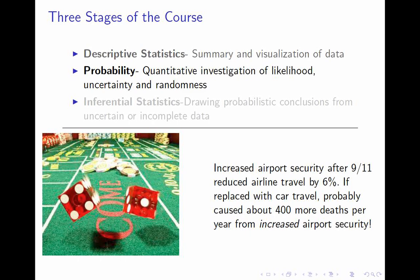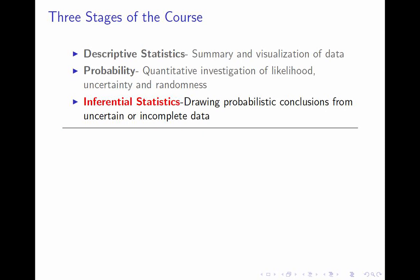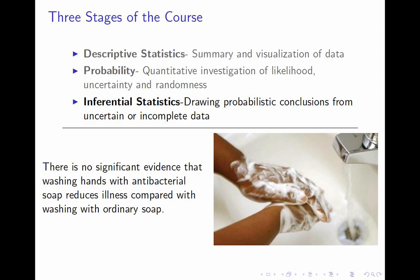The second half of the course will be devoted to the central topic: inferential statistics, which takes descriptive statistics and probability and puts them together. Inferential statistics is drawing probabilistic conclusions from uncertain or incomplete data. It is the central tool used to do science and to make decisions in business and policy. We'll look at studies about the effectiveness of antibacterial soap and learn what 'significant evidence' means. This is the deepest and most interesting part of the course.